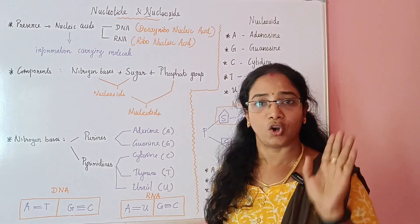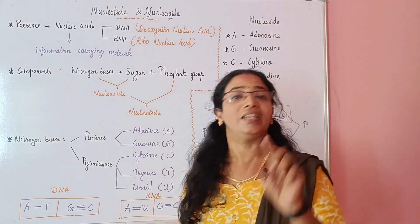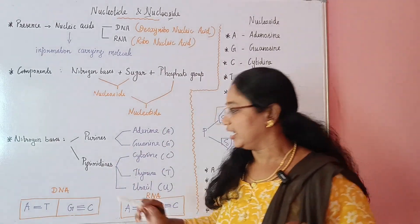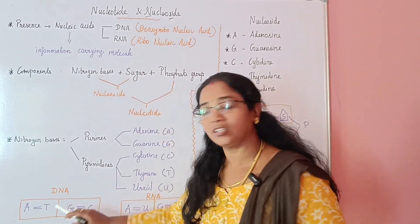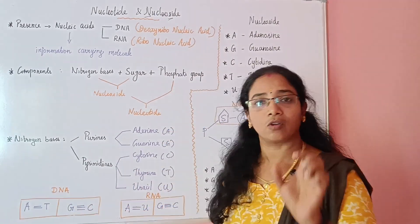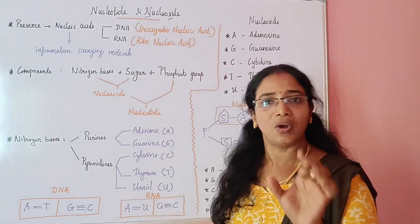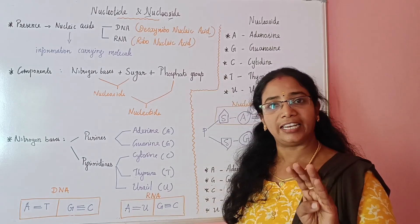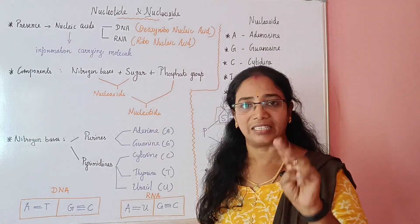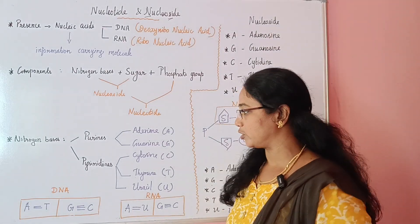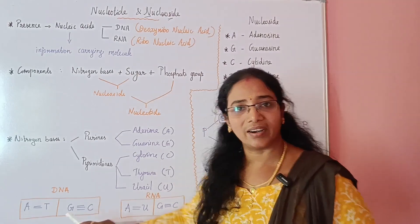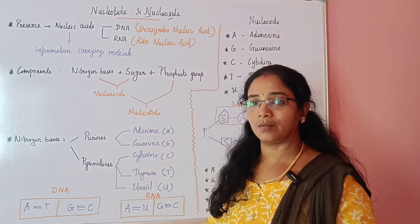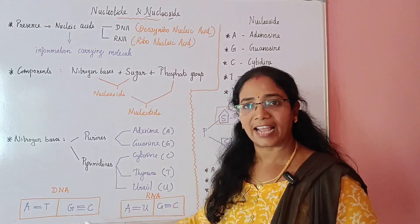Adenine always combines with thymine — we call it A-T pairing, with two hydrogen bonds. Guanine combines with cytosine — G-C pairing — with three hydrogen bonds. Adenine-thymine: two hydrogen bonds; guanine-cytosine: three hydrogen bonds.